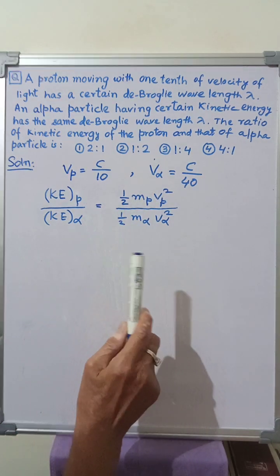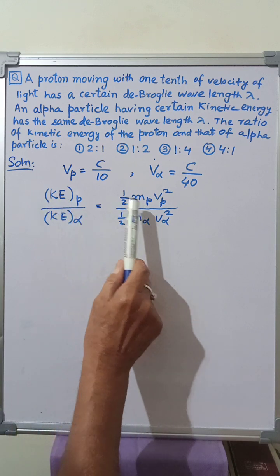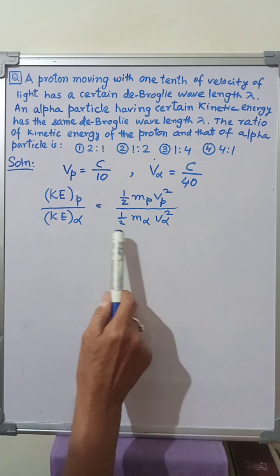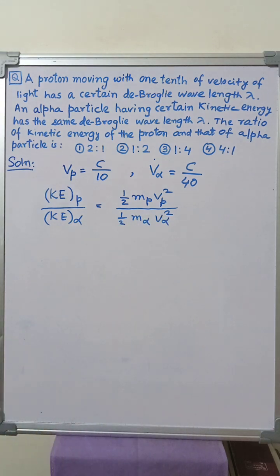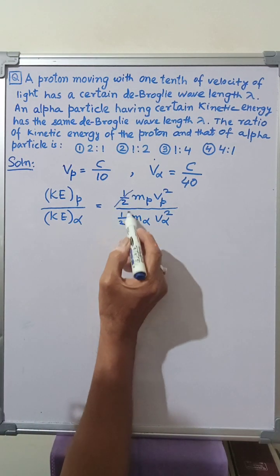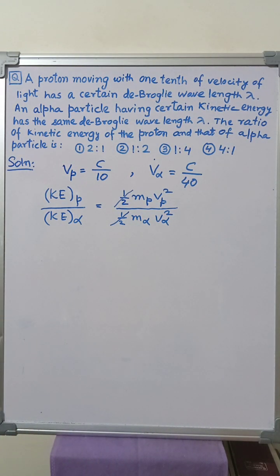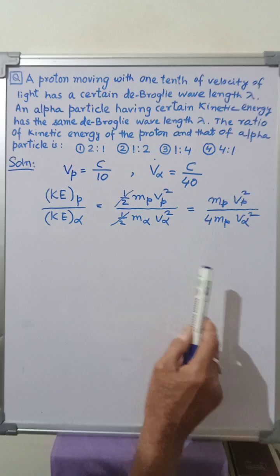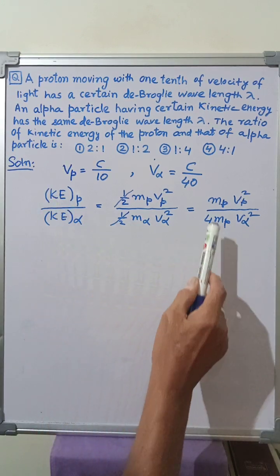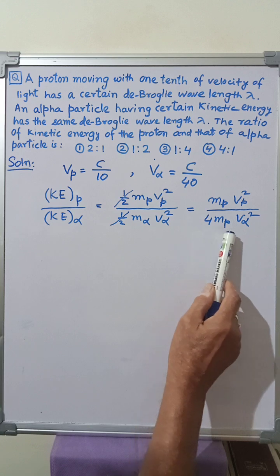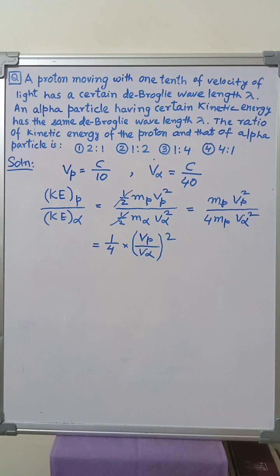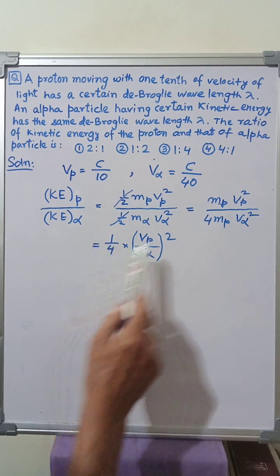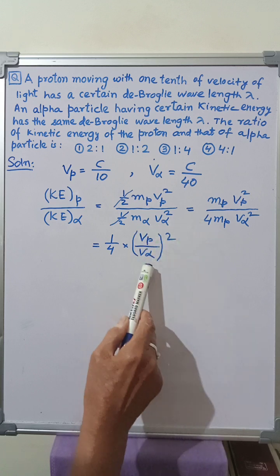Kinetic energy equals half mv squared, so kinetic energy of the proton equals half m_p v_p squared. Similarly, kinetic energy of the alpha particle equals half m_alpha v_alpha squared. The half cancels from numerator and denominator. Putting m_alpha equals 4m_p, we get the ratio of kinetic energy equals m_p v_p squared divided by 4m_p v_alpha squared. Cancelling m_p gives us 1 by 4 times (v_p by v_alpha) whole squared.